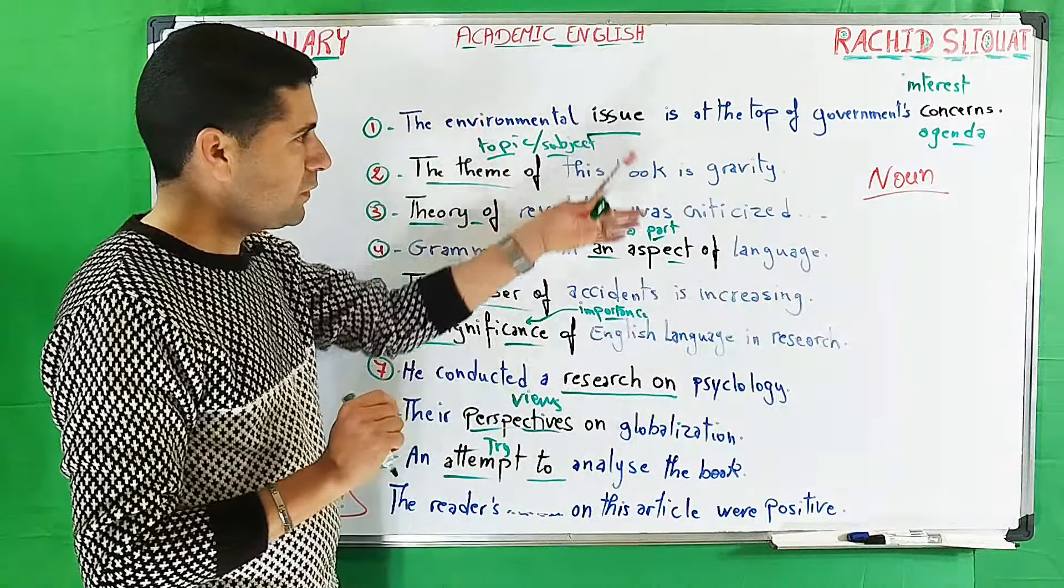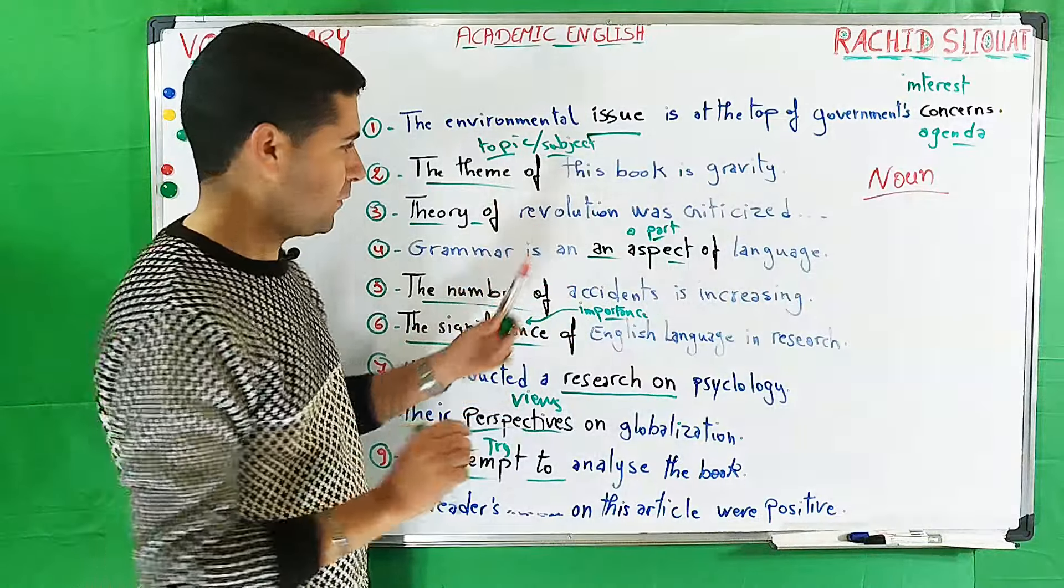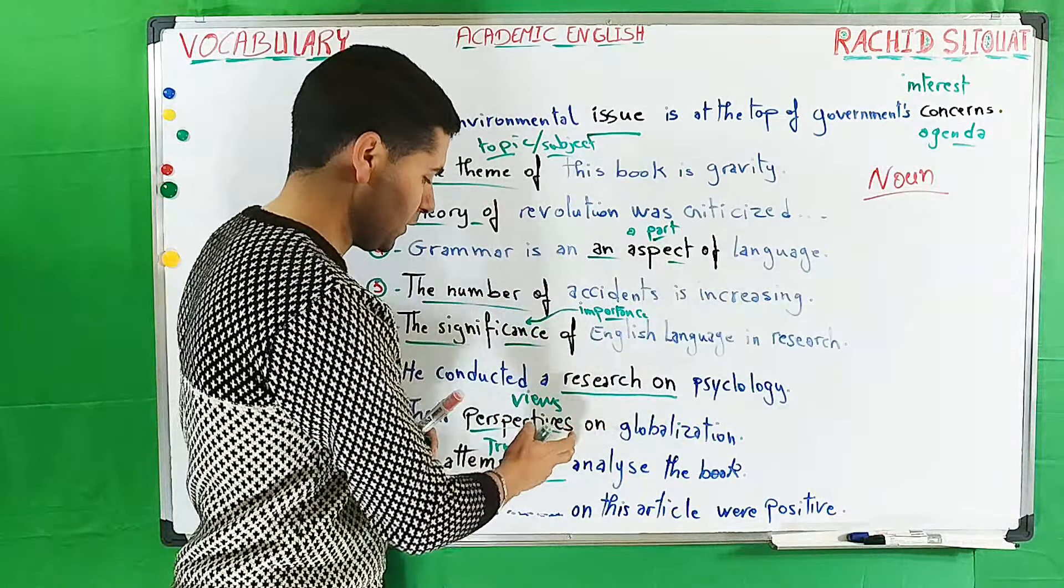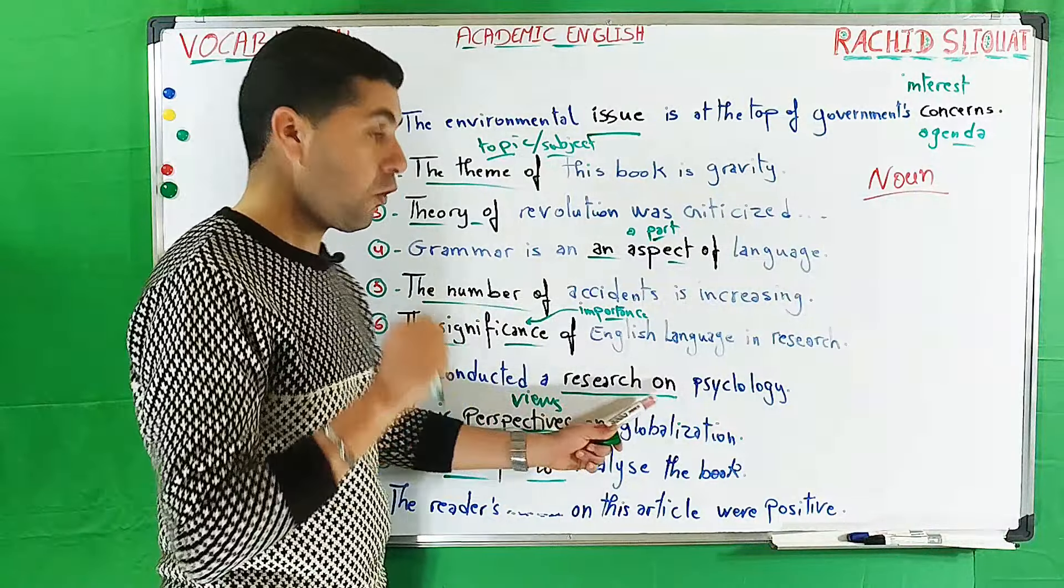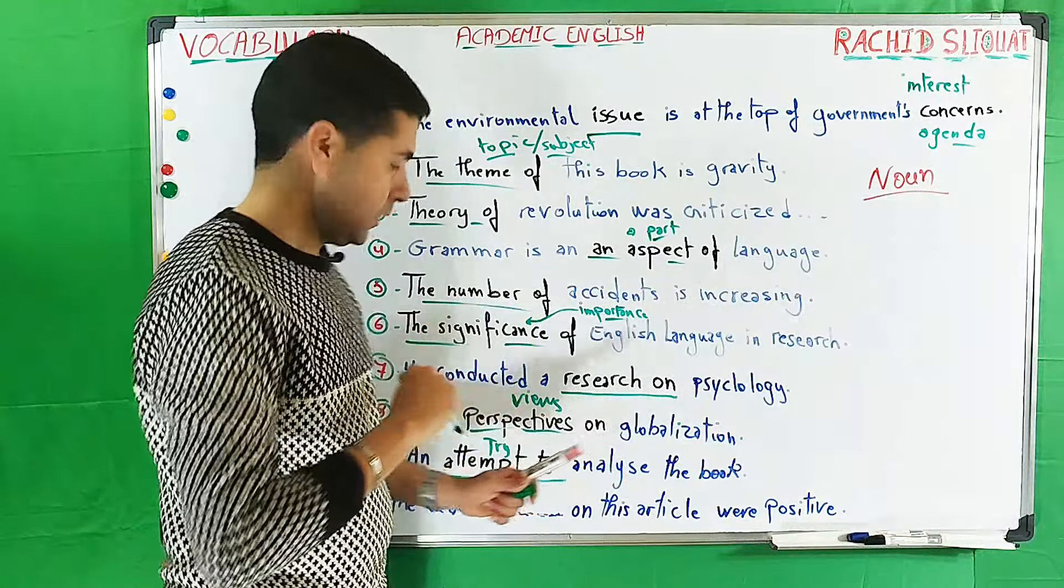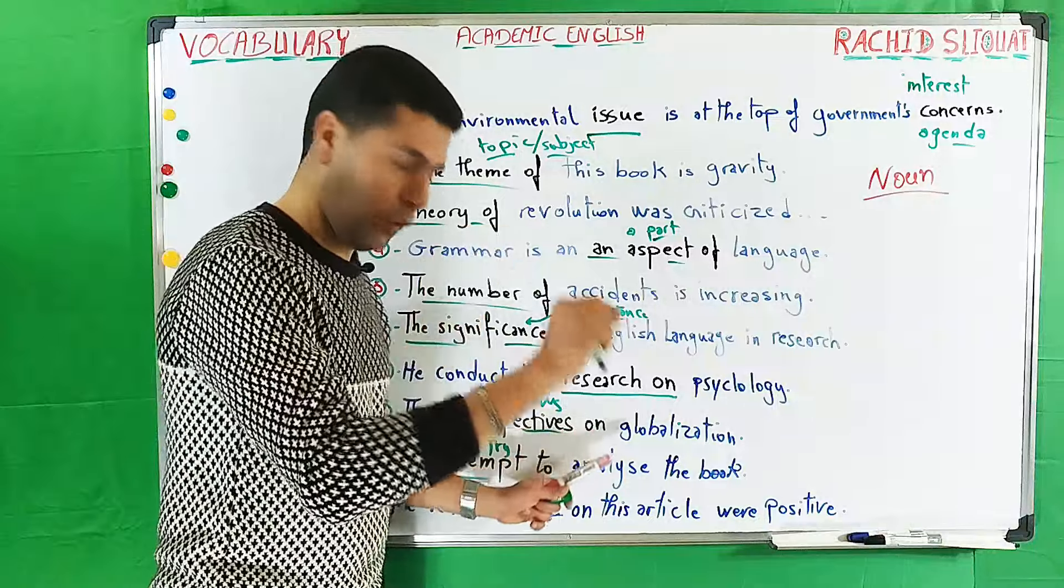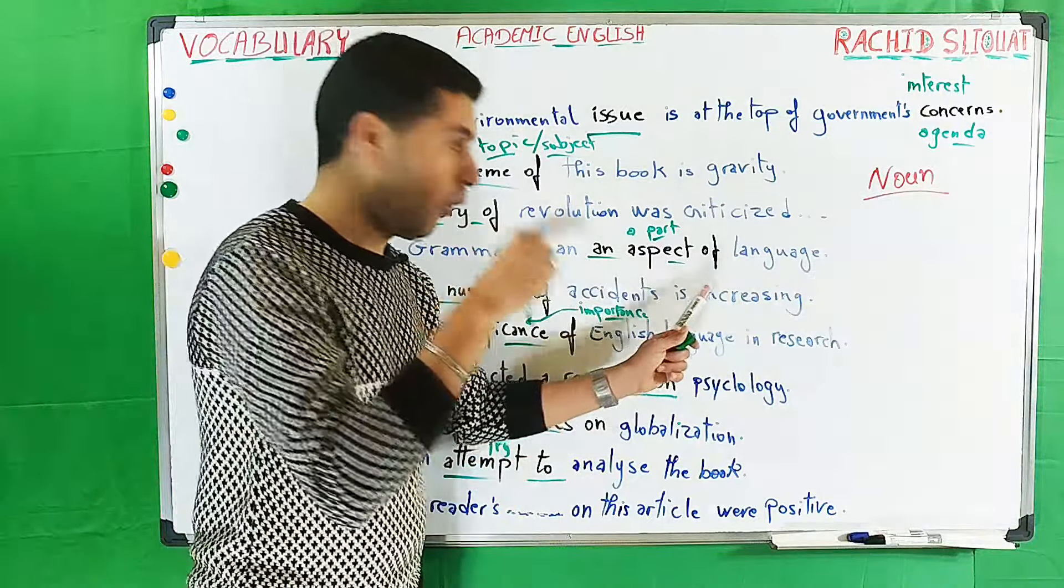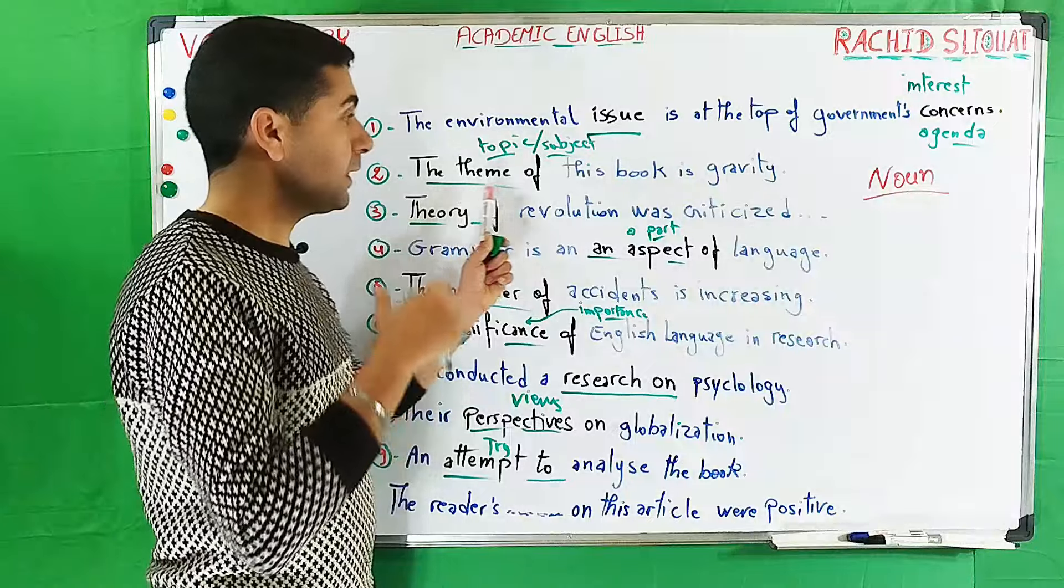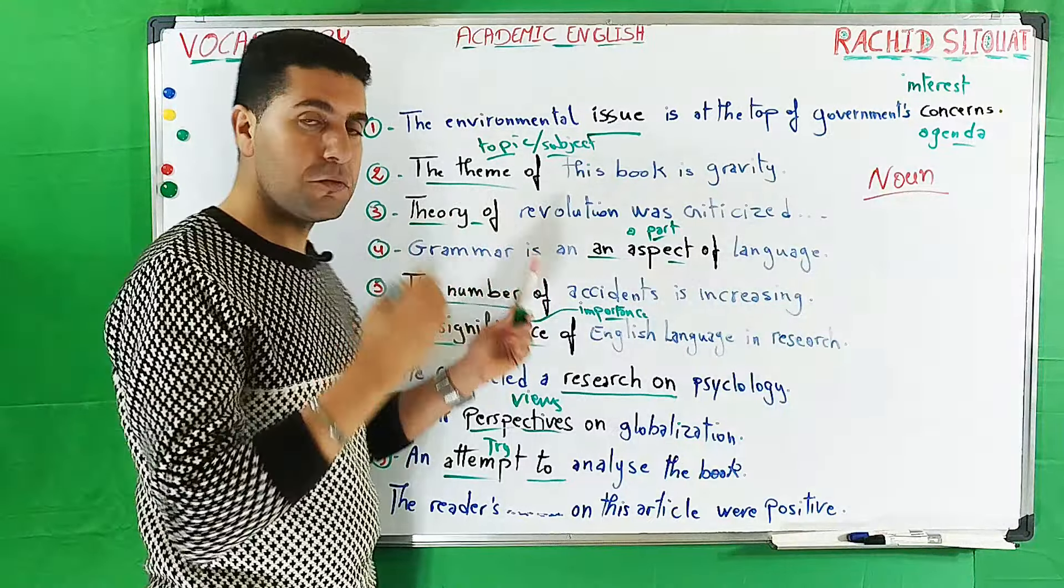As you can see, all these nouns and expressions can be used with prepositions. Here I've given them to you with their prepositions. For example, research on, perspectives on, attempt to, an aspect of, the theme of, or theory of. These are very essential expressions or vocabulary.